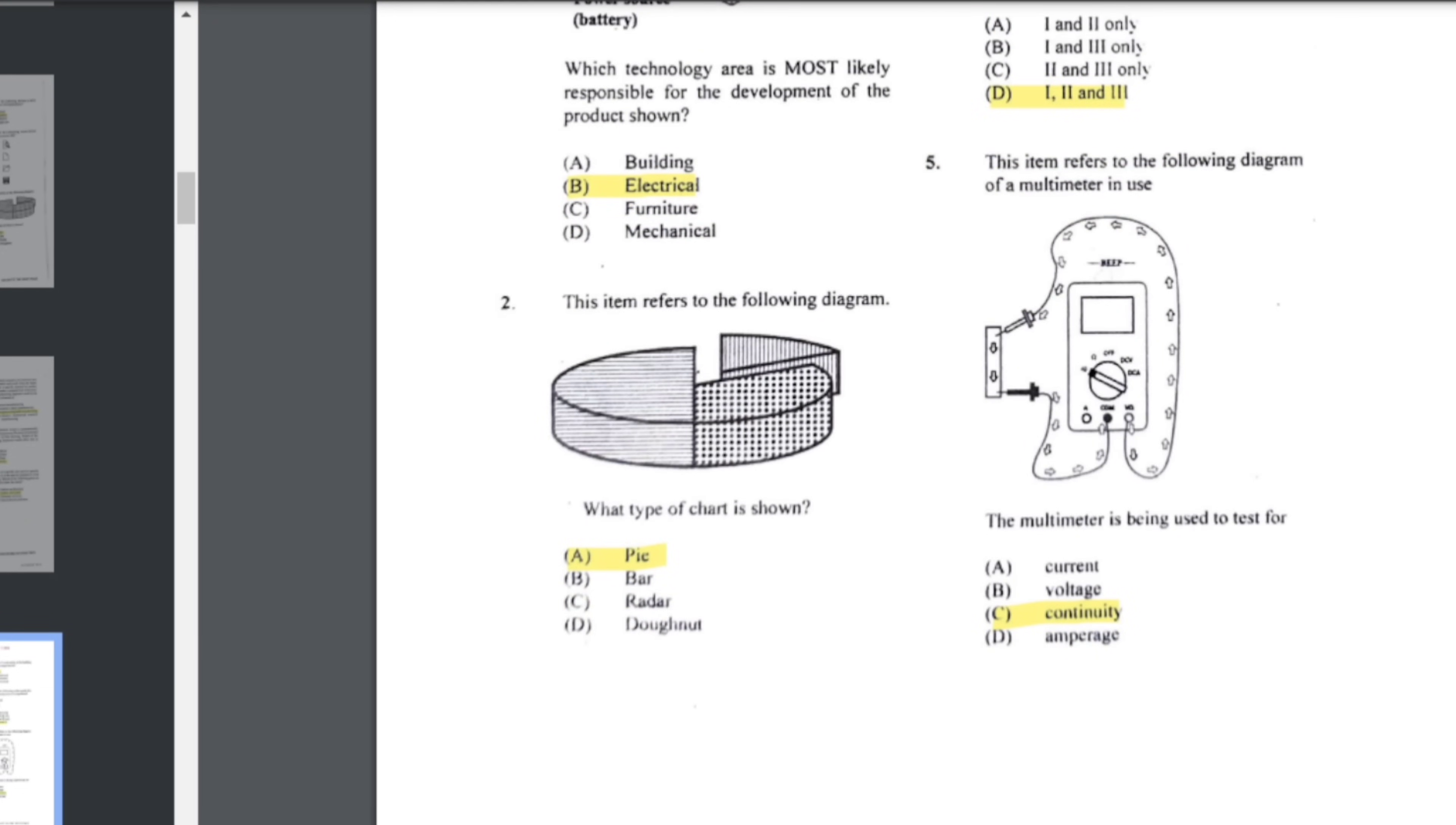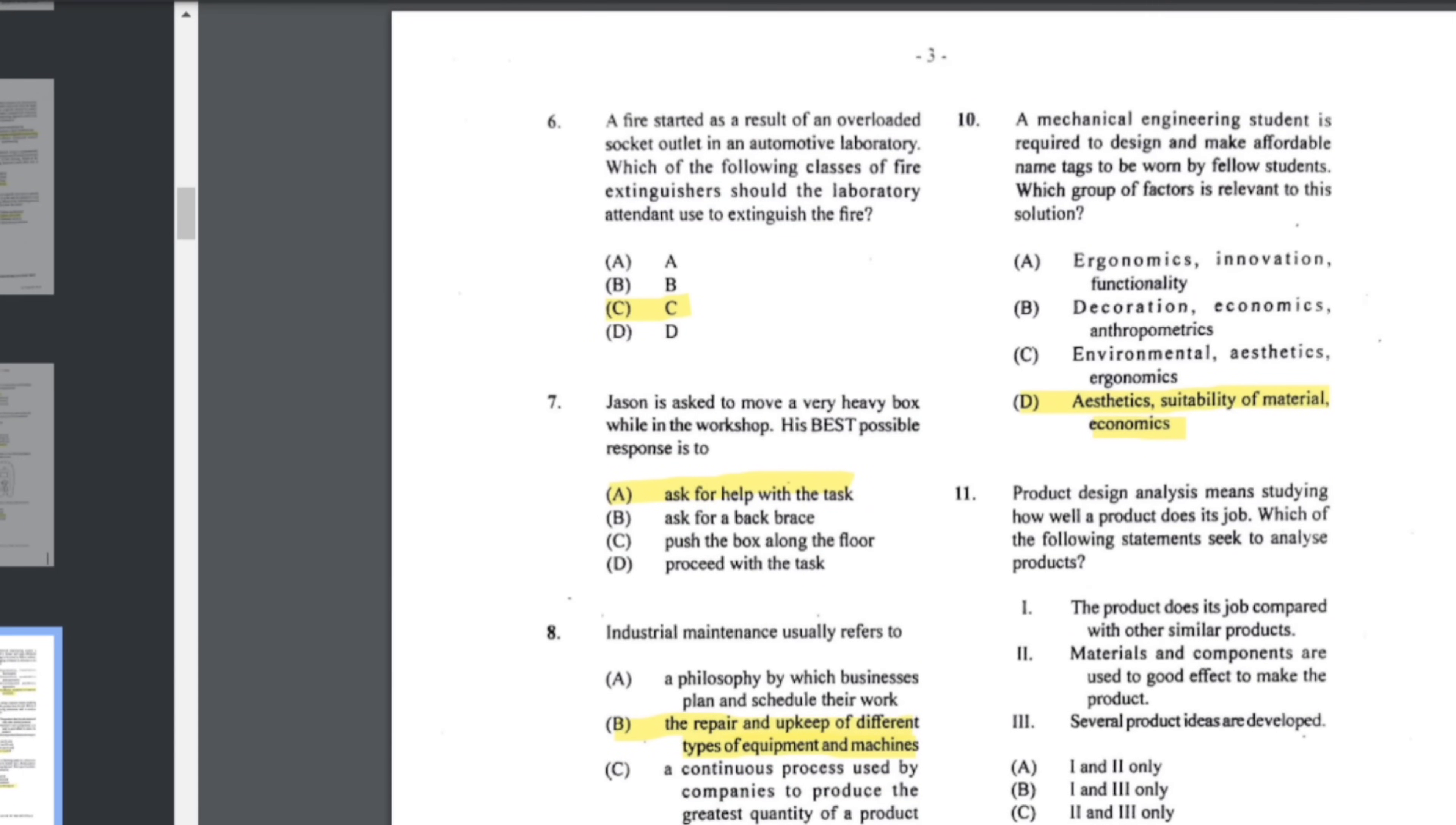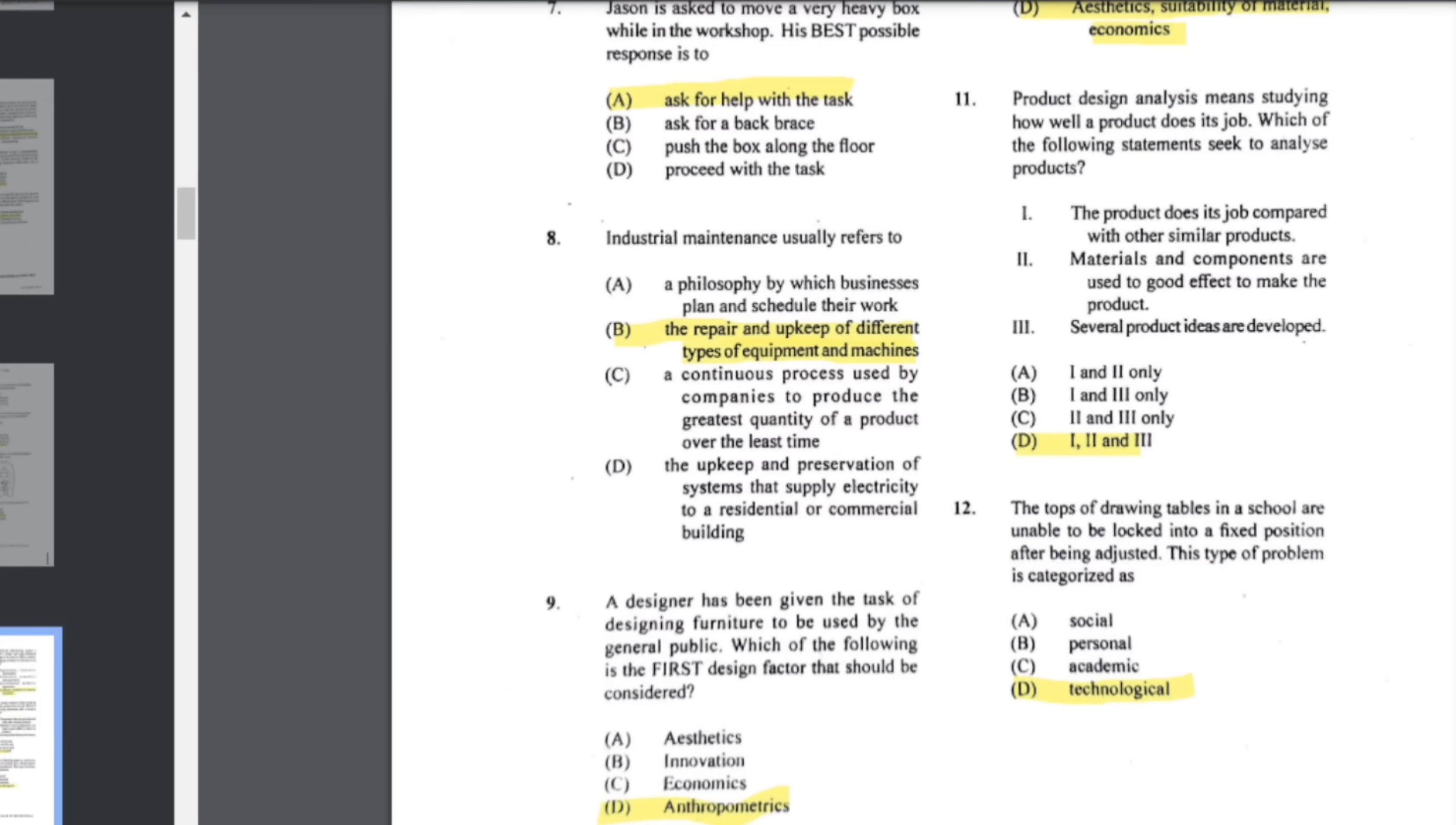Number five says this item refers to the following diagram for multimeter in use. The multimeter is being used to test for, in this case, we are testing continuity. Number six: a fire started as a result of an overloaded socket outlet in an automotive laboratory. Which of the following classes of fire extinguishers should the laboratory attendants use? That would be class C fire extinguishers. Number seven: Jason is asked to move a very heavy box while in the workshop. His best possible response is to just ask for help.